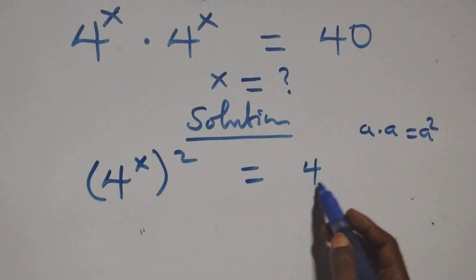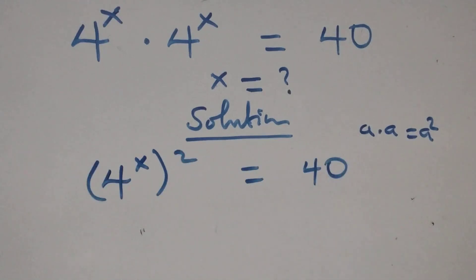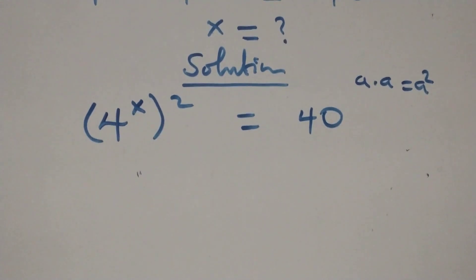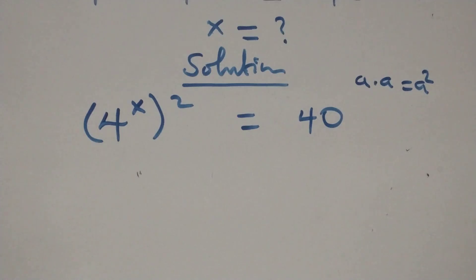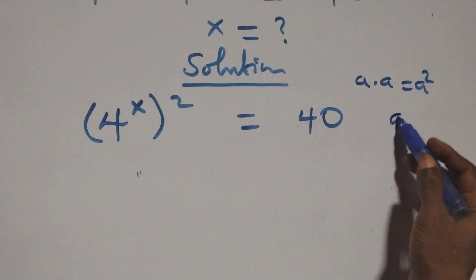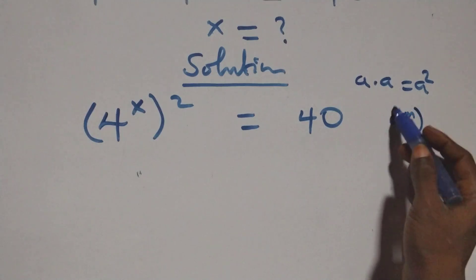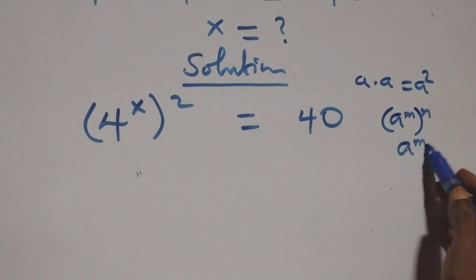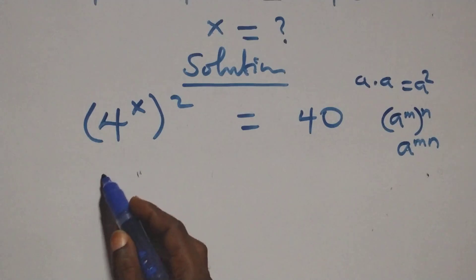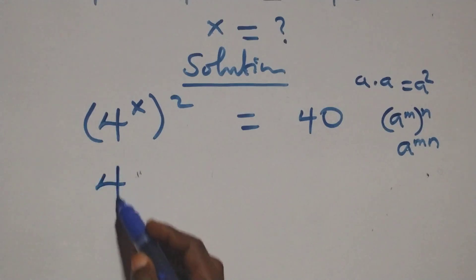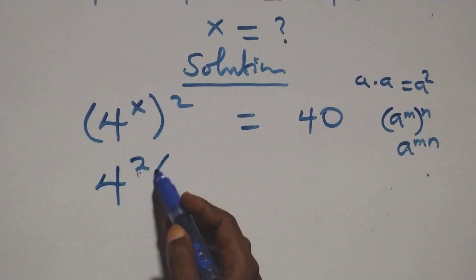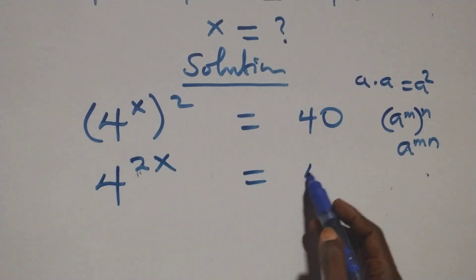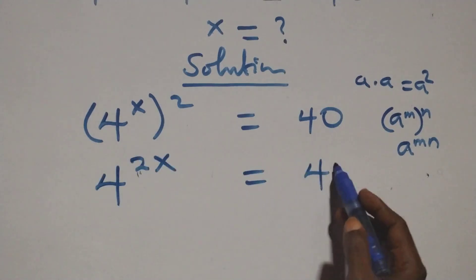This equals 40. Now this follows: a raised to power n raised to power n is the same thing as a raised to power mn. So this can be written as 4 raised to power 2 times x, that's 2x, equals 40.